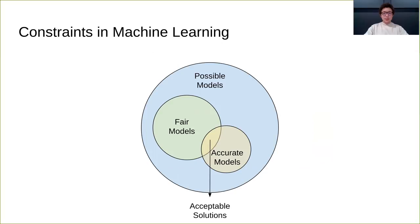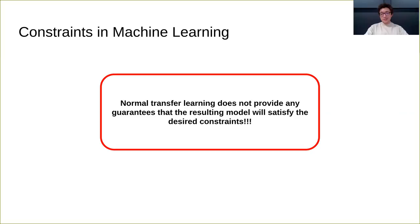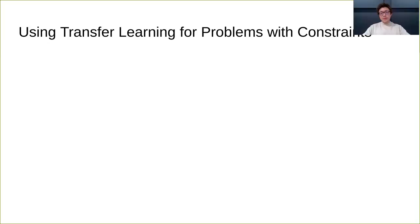However, there is a class of problems that transfer learning cannot solve, and that is constrained problems. These are problems where there is another requirement for the model to satisfy that is not accuracy. This is usually something like fairness or privacy. The reason transfer learning cannot solve these problems is because transfer learning does not make any guarantees that the resulting model will satisfy the desired constraints. So what do we do?